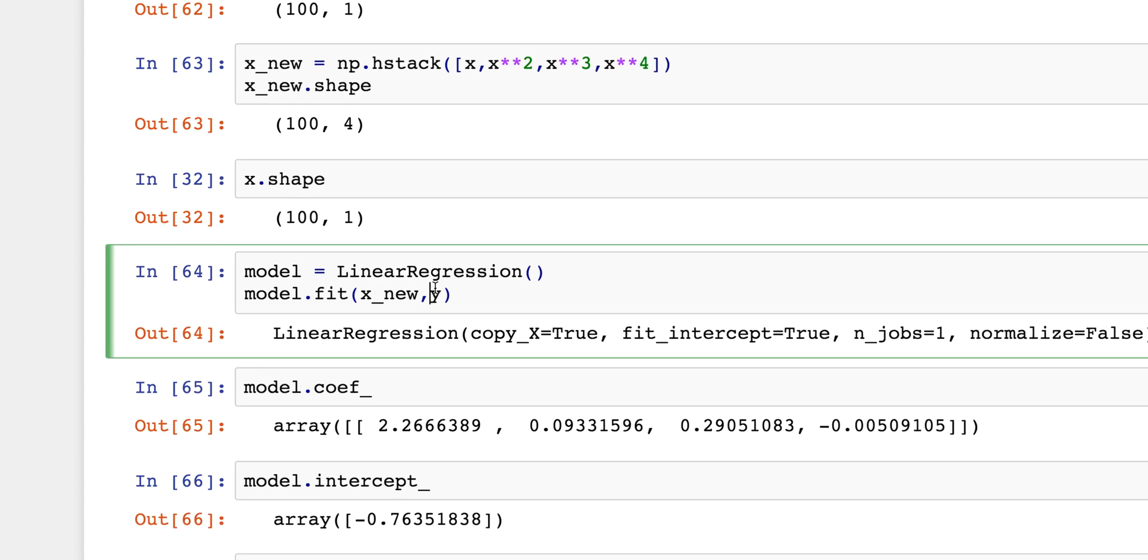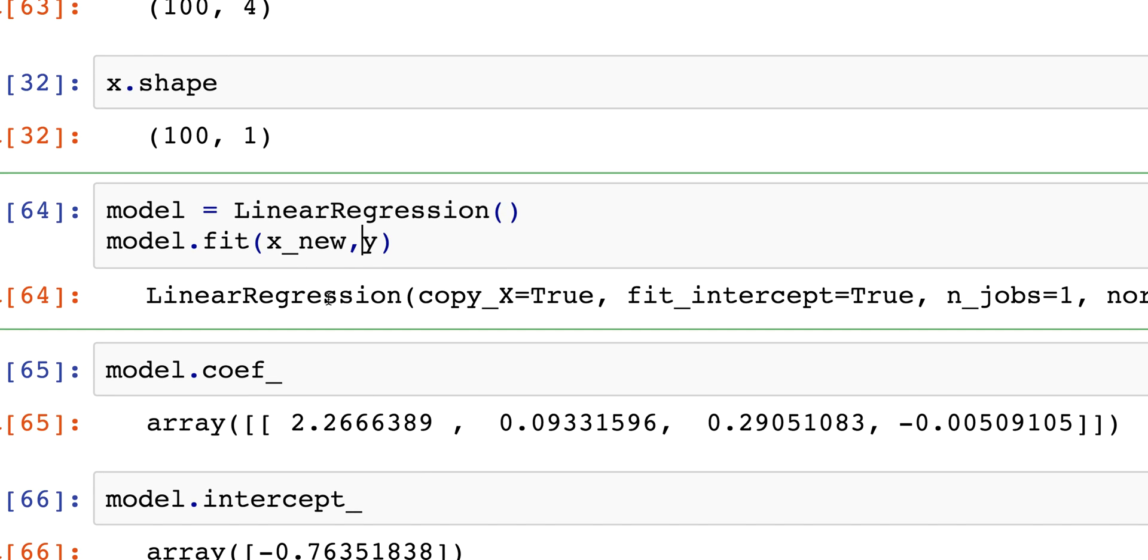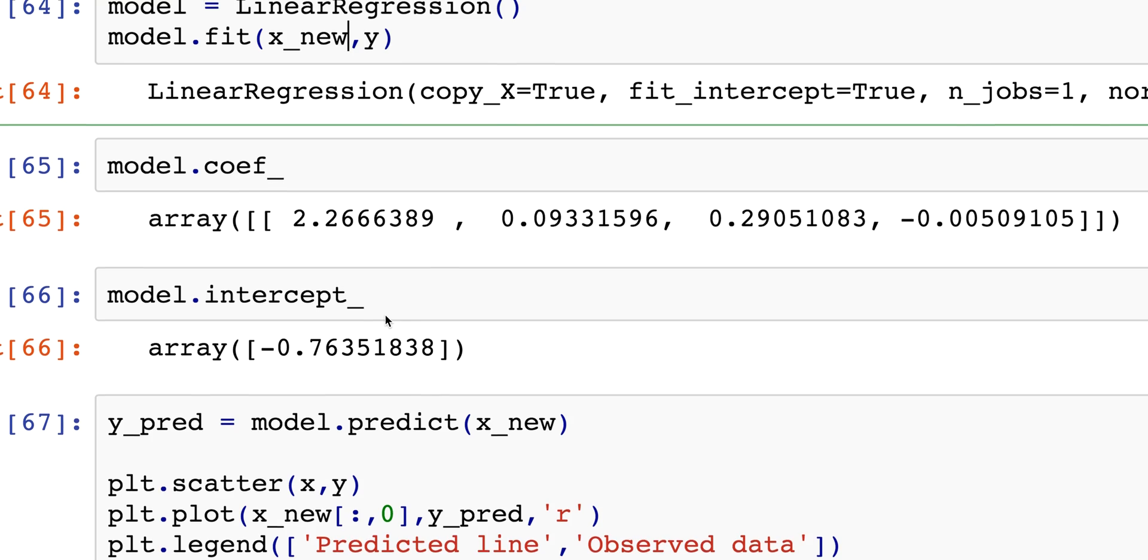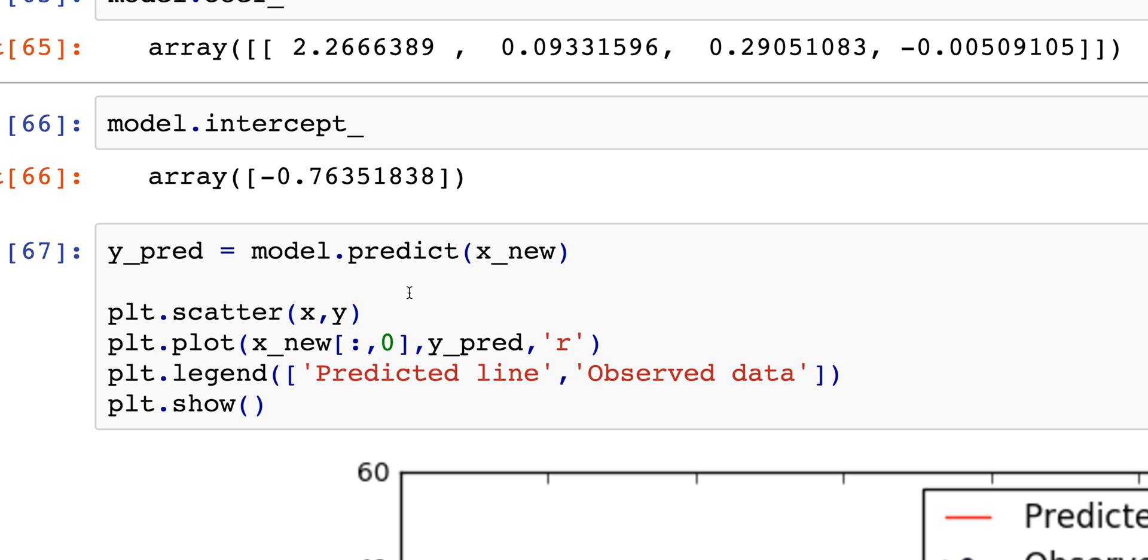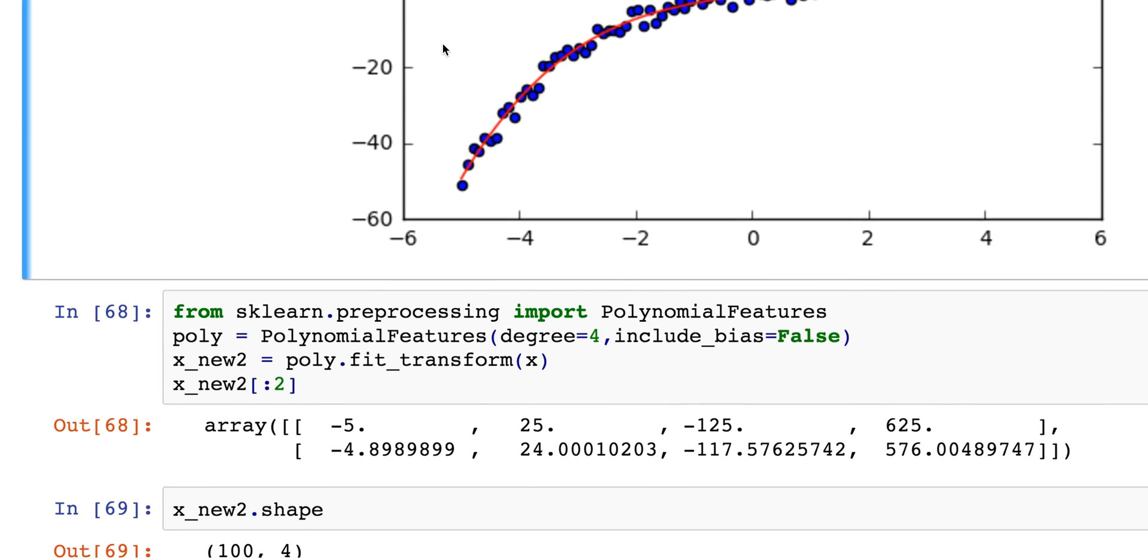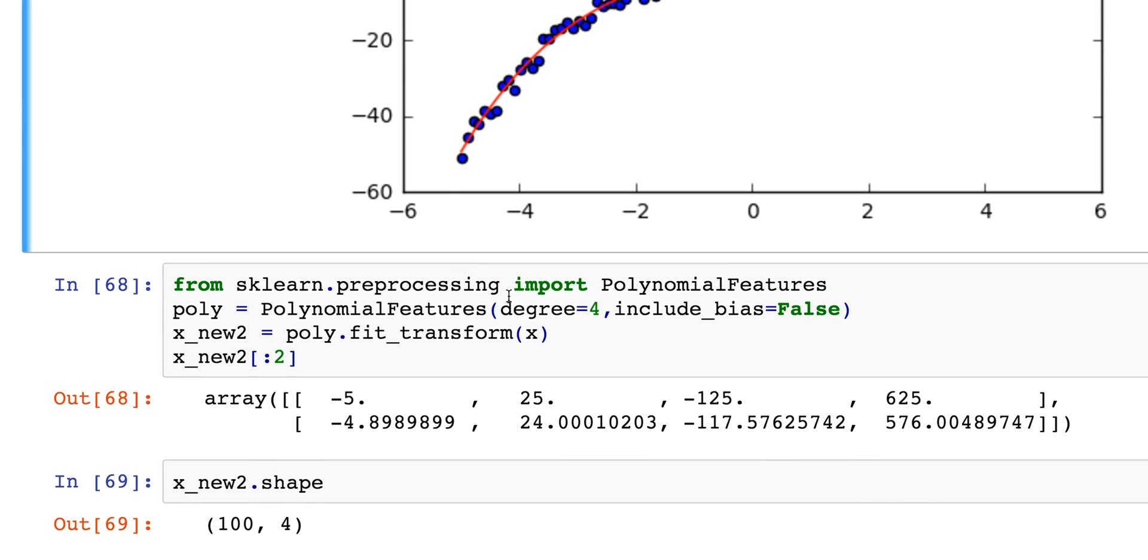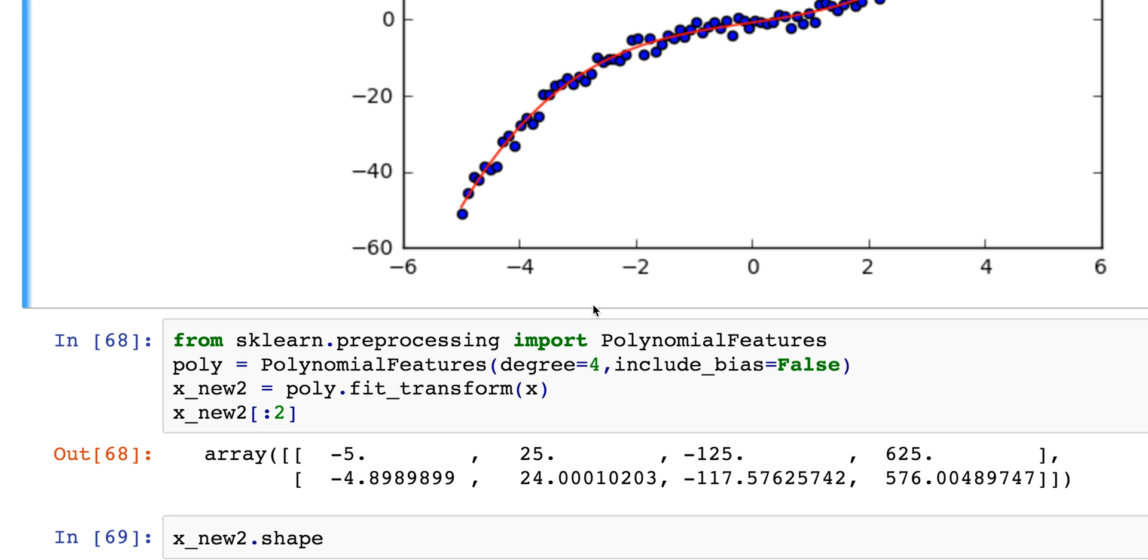What I'm expecting is these values should not change at all. So if I put in x_new2 and the model coefficients, fingers crossed they don't change and they don't. Everything is exactly the same because all you've done is taking it to the degree that you want. And this does it fairly quickly for you rather than you typing it out and having to stack them like I did.